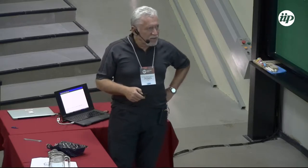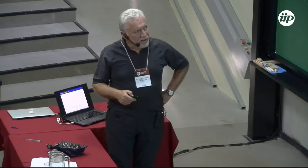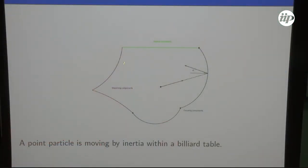This is what I call a mathematical billiard — standard billiards. You have a billiard table which is some domain with a boundary. The boundary consists of regular components: if they are convex inwards they are dispersing components, if convex outwards they are focusing components, and if they are planar they are neutral components. The standard billiard, which I call mathematical, has a point particle moving — which is of course a mathematical object.